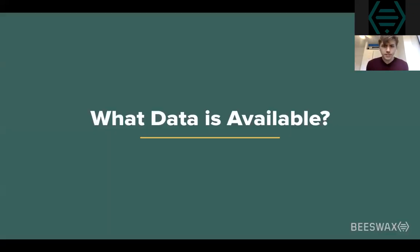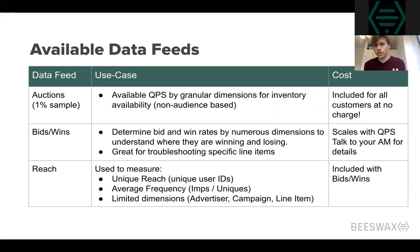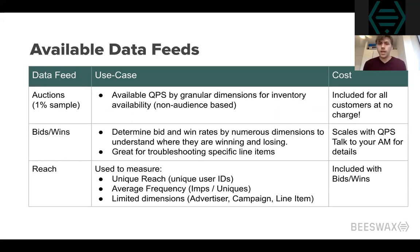So what data is available in Metamarkets? There are three available data feeds. Most customers will be most familiar with the auctions feed because we include auctions to all customers at no cost. The auctions feed works by taking a 1% sample of the QPS going to your bidder, forwarding it to Metamarkets, and then Metamarkets will upsample it back to 100%. What most customers use it for is the ability to slice and dice their QPS and see the available inventory coming to their bidder, to determine if they have the scale for a given campaign targeting criteria.